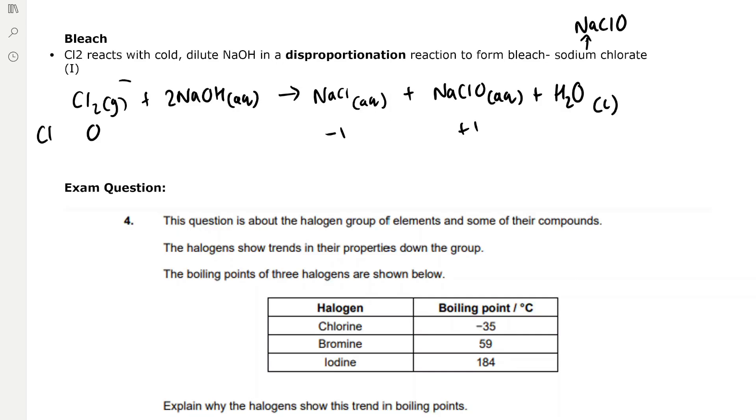For bleach manufacturing, chlorine reacts with cold dilute sodium hydroxide in a disproportionation reaction to form bleach, which is sodium chlorate one. The chlorine atom has an oxidation number of plus one. Chlorine reacts with two molecules of NaOH to form sodium chloride and sodium chlorate one, plus water. Chlorine goes from zero in Cl2 to minus one in NaCl and plus one in NaClO.